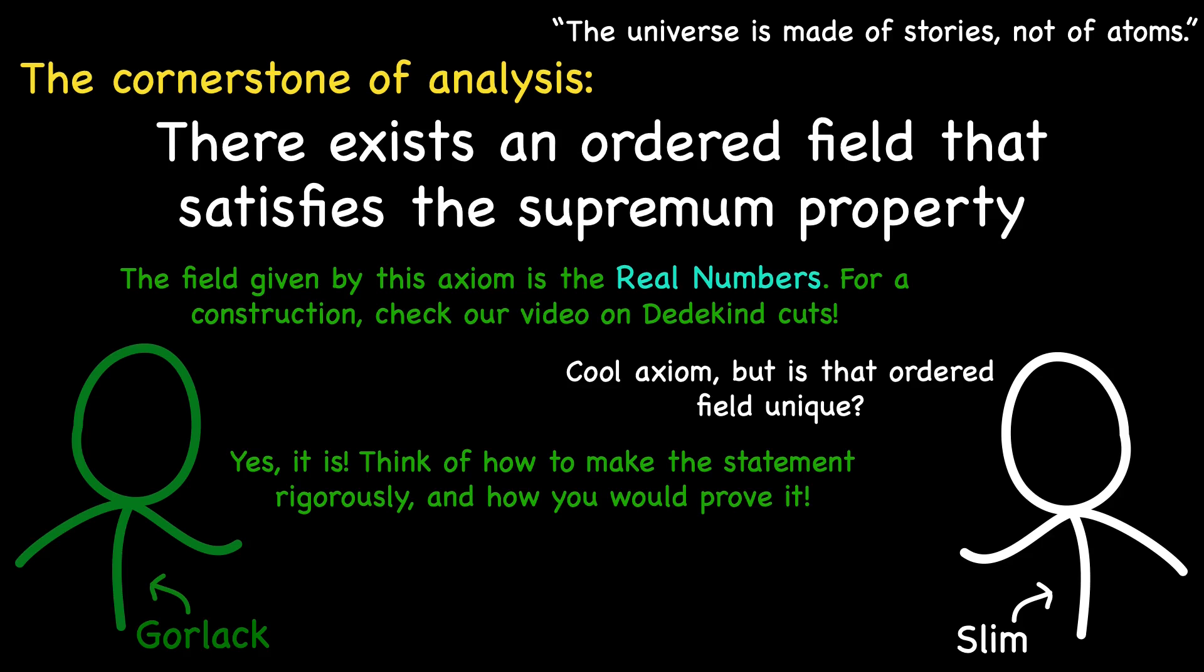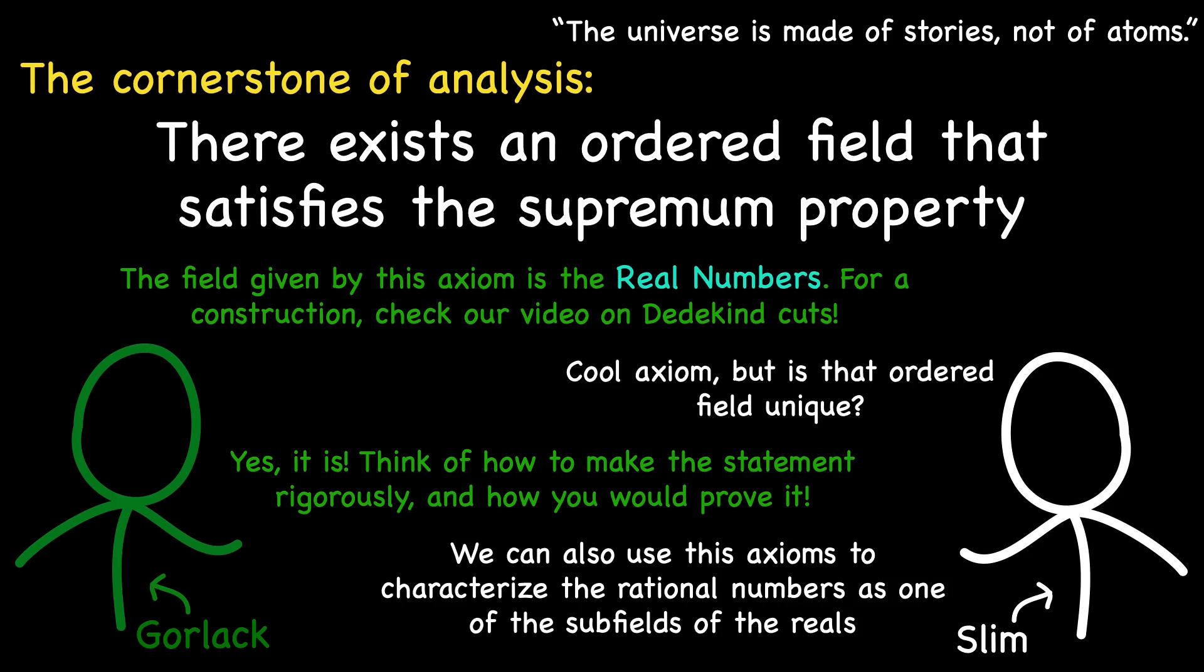Now there is one lingering question. We set out to uniquely characterize the rational numbers, but our axiom characterizes the real numbers. Fear not, for armed with our cornerstone axiom, we can indeed characterize the rational numbers.